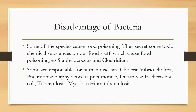Now for the disadvantages: some species cause food poisoning. They produce toxic chemical substances out of food, which causes food poisoning. Examples include Staphylococcus and Clostridium.